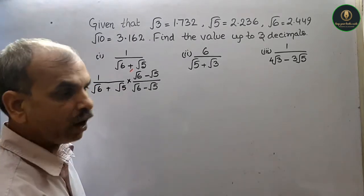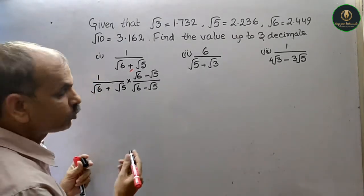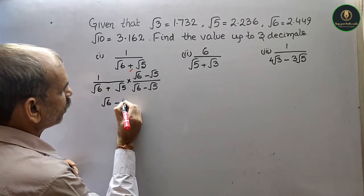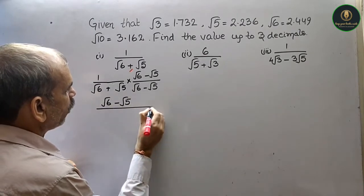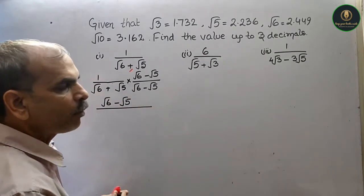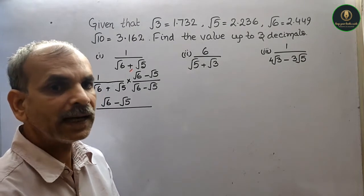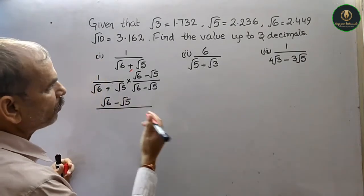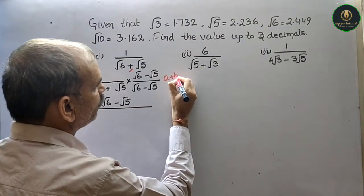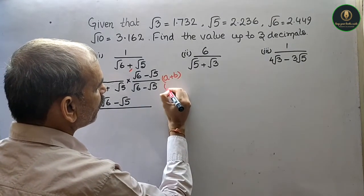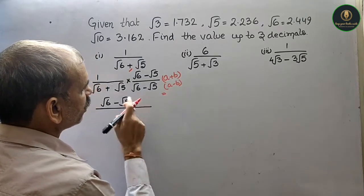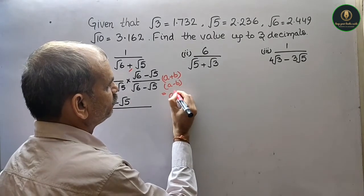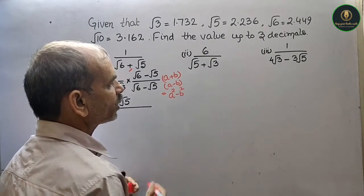ठीक है. अब देखो, उपर का multiply करो तो आपका root 6 minus root 5 आएगा. नीचे का देखो — कौन से form में है? यह a plus b और a minus b form में है. तो यह a plus b and a minus b form में है, that is equal to a square minus b square.